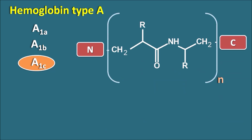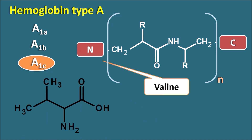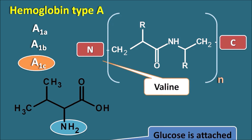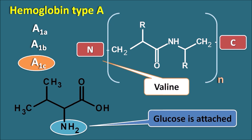Suppose hemoglobin is having a peptide structure like this. Now this N-terminal is having the valine, and valine is an aliphatic amino acid with an alpha portion and amino group. Now this amino group is responsible for the attachment of the glucose, where the glucose is going to be attached to form a glycosylated hemoglobin, and nowadays it is called as glycated hemoglobin.